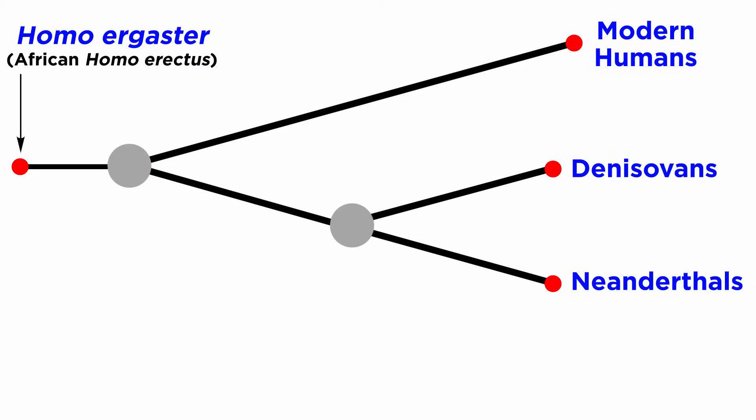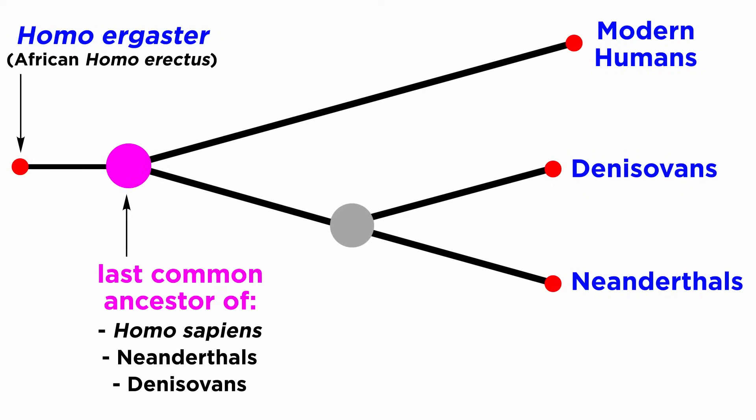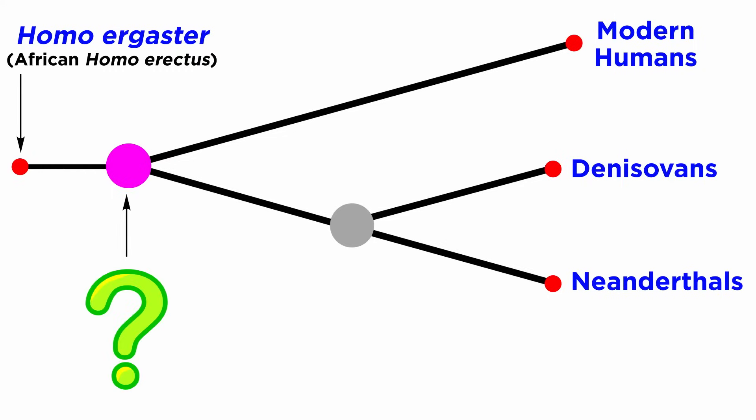Homo ergaster, or African Homo erectus, is thought to have given rise to the last common ancestor of Homo sapiens, Neanderthals, and Denisovans, all of whom we will meet a bit later. However, who this ancestor was is up for debate.